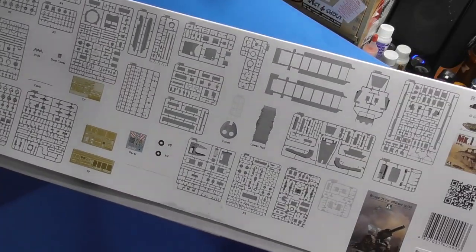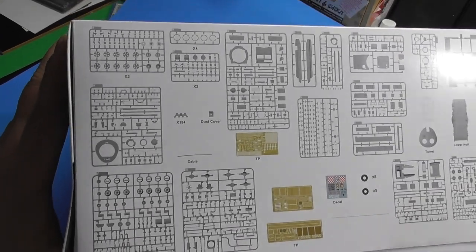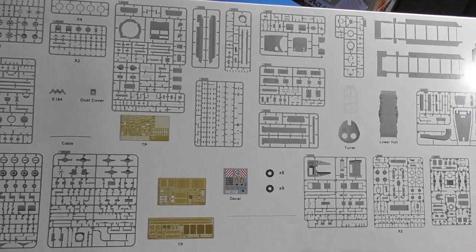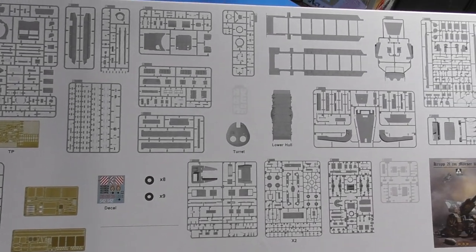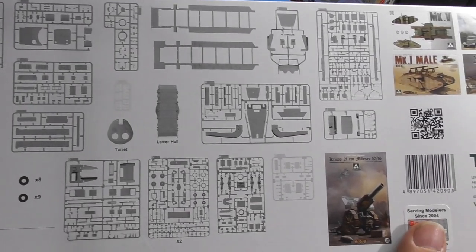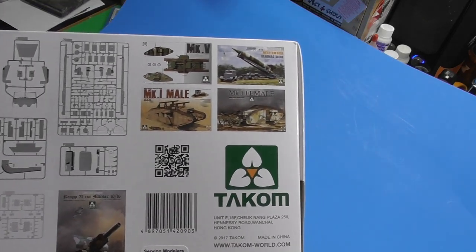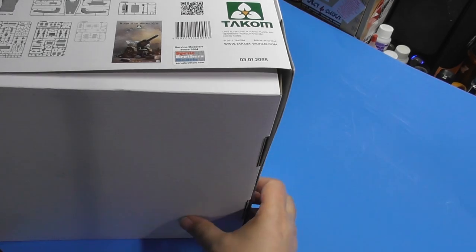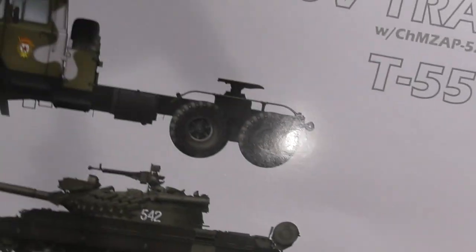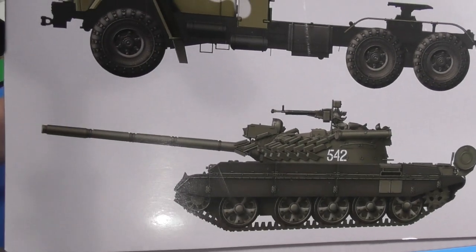All the sprues. Three PE, one set of decals, eight and nine tires respectively. More parts all the way across. We're on this end of the box. The truck, the tank. What's on this end? Same thing.